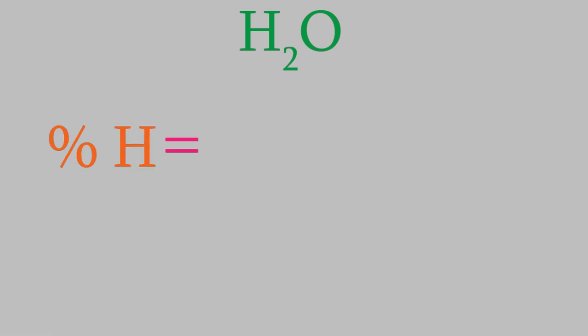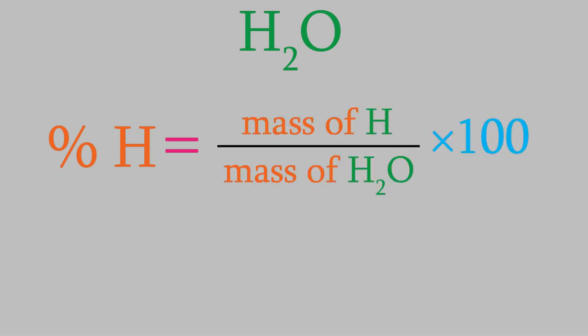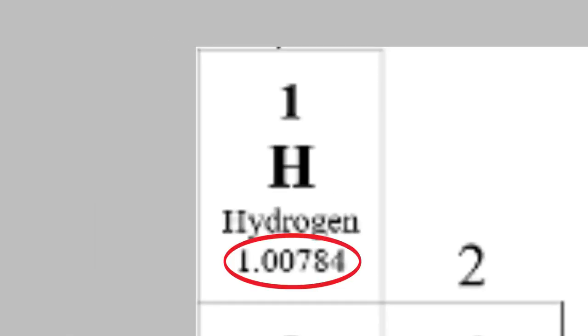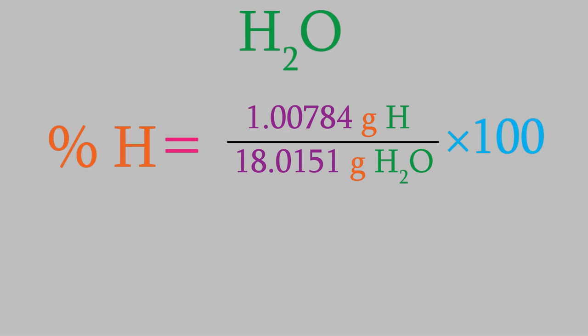Now what if I wanted to know the percentage of hydrogen in water instead of oxygen? We'd set it up the same way, but there's an important difference. In the numerator, we put the mass of hydrogen. From the periodic table, we find that it's 1.00784 grams per mole. But remember that there are 2 of these in water, so we have to multiply that mass by 2. In the denominator is the mass of water, which we already calculated last time. That gives us a percentage of 11.1888% for the hydrogen.